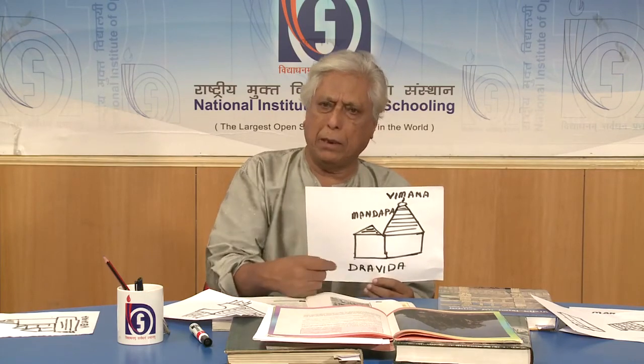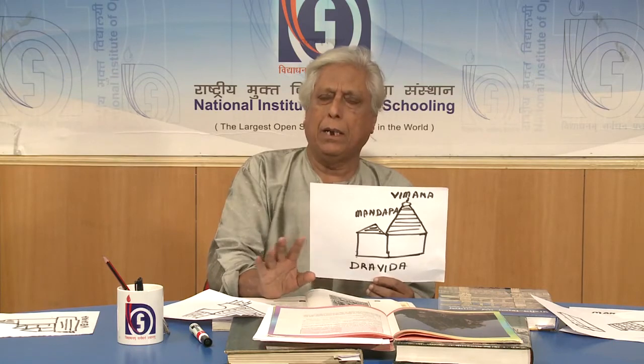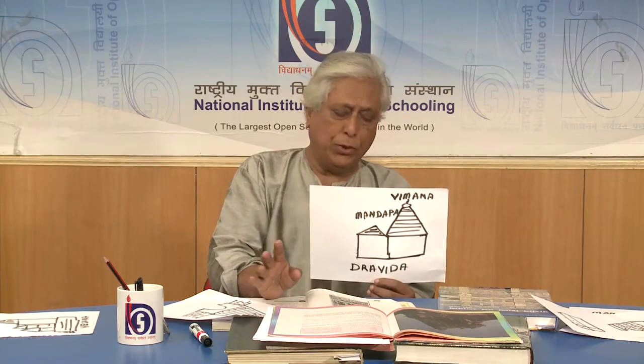In the Dravida temple, the Vimana follows the style of the Dharmarajaratha, and in the middle, under the canopy, there are goddess images. Then there is the Mandapa, and sometimes in between, there is a smaller Mandapa called the Ardha Mandapa. The devotees enter through this and ultimately reach the Sanctum Sanctorum.